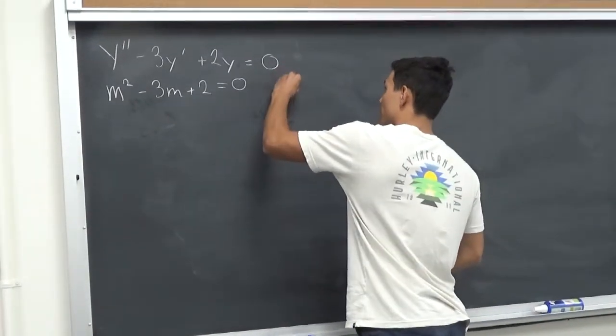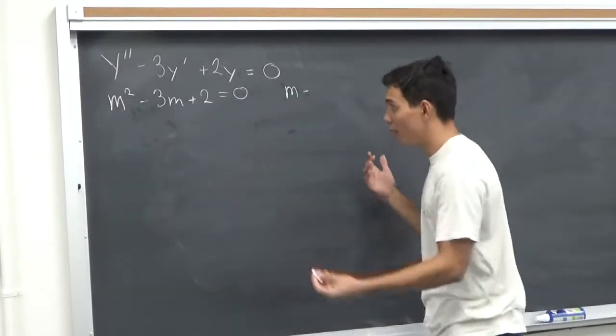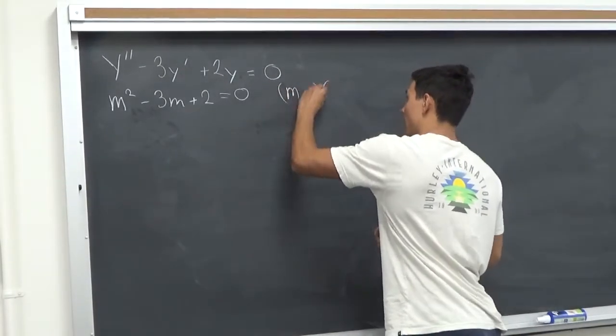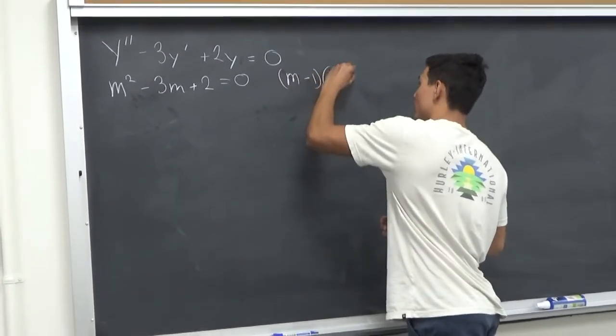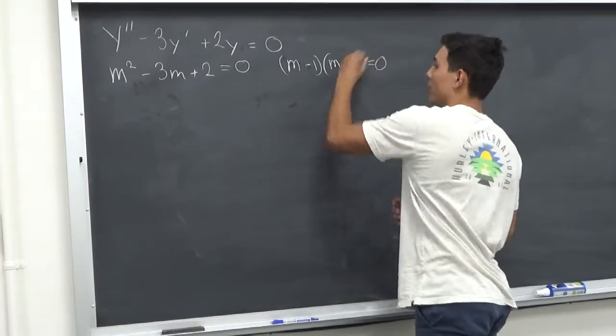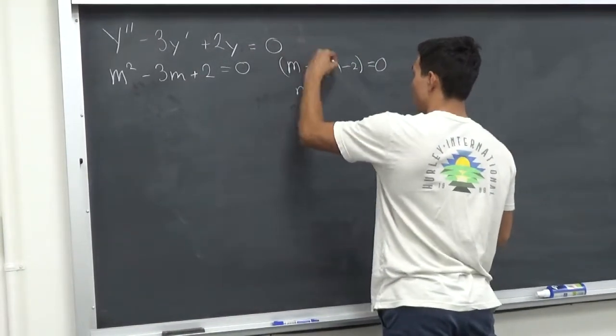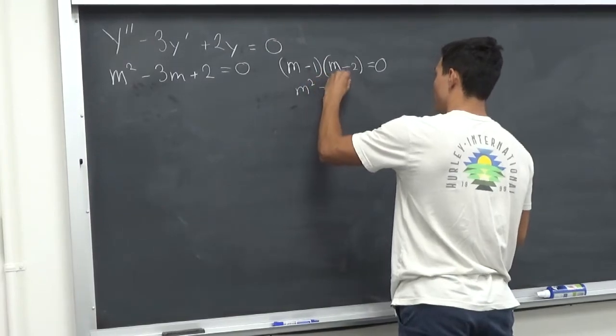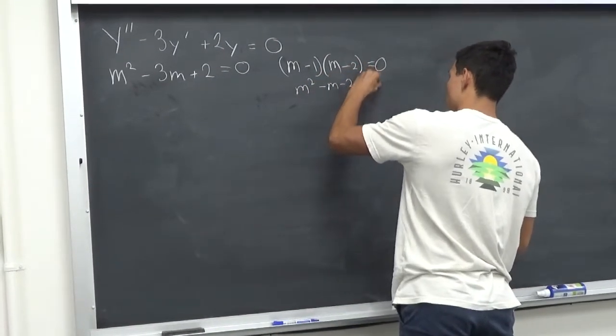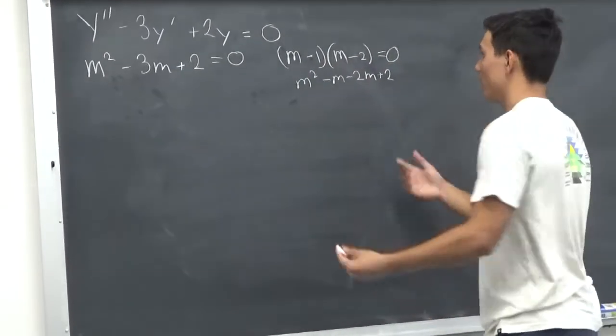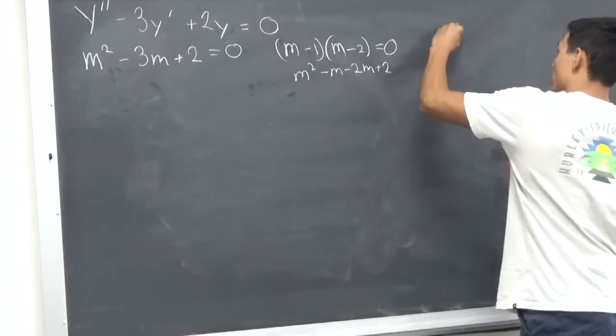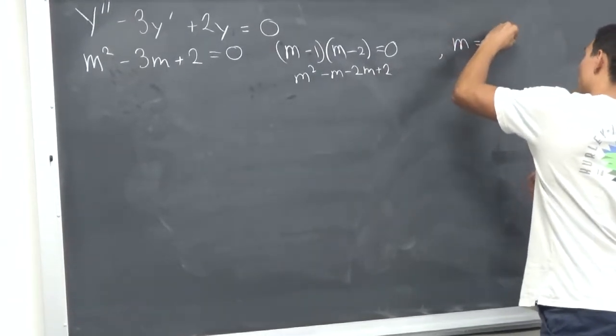So we can write this as m minus 1, m minus 2 equal to 0. And if you don't believe me, we can see m squared, and that would be negative m minus 2m plus 2. So it's the same thing. So our roots are m equals 1 and m equals 2.